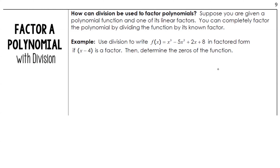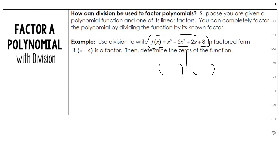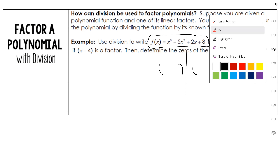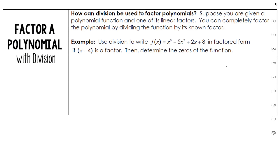Today we're going to talk about how we can use division to find zeros. Before, we were given something and you would use grouping to find your factors and then solve for your zeros. Now, what if I gave you one of the factors already? We can use synthetic division to figure out what your other factors are. Let me show you an example.